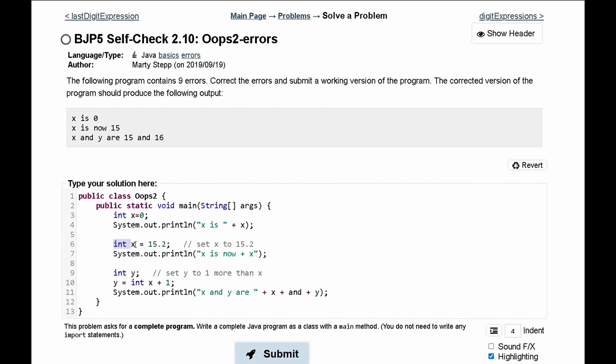We cannot re-declare x, so we can take that out, that integer out, that int declaration out. And x is not double, so 15.2 is not a valid assignment to x, so we need to delete that and make it just 15.